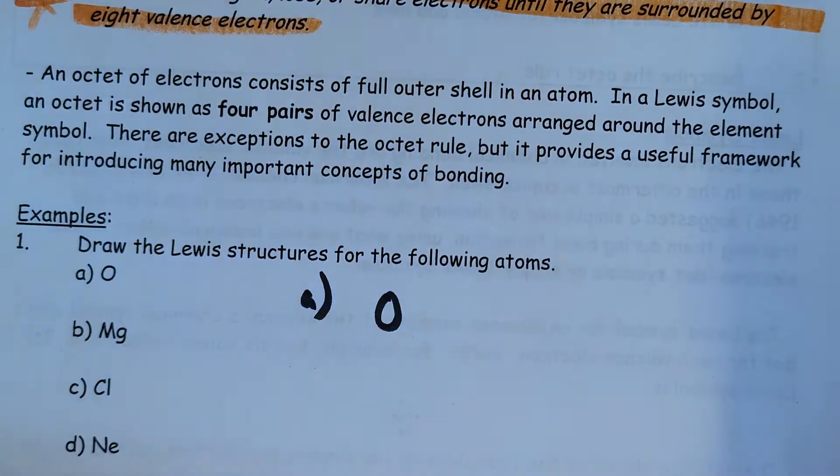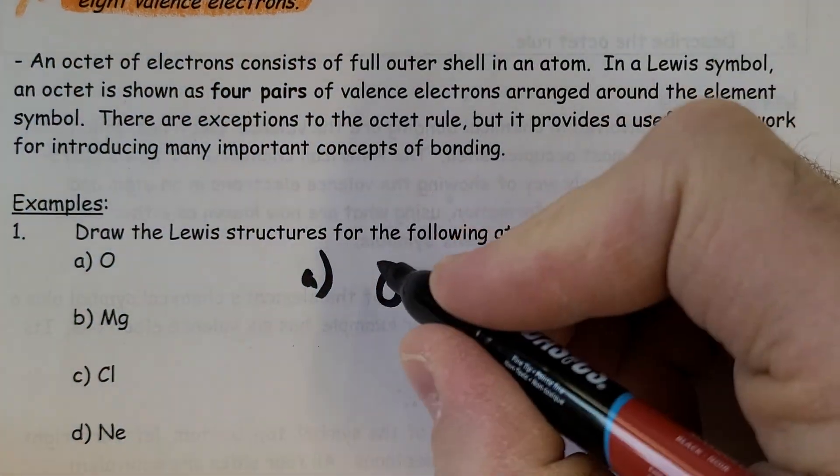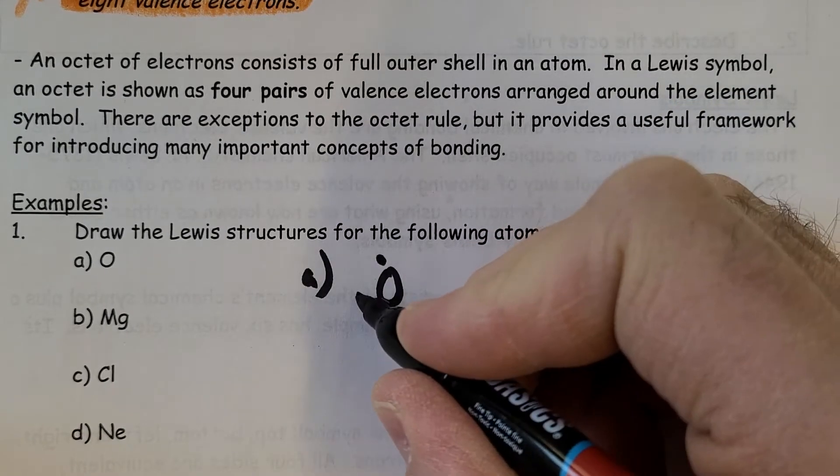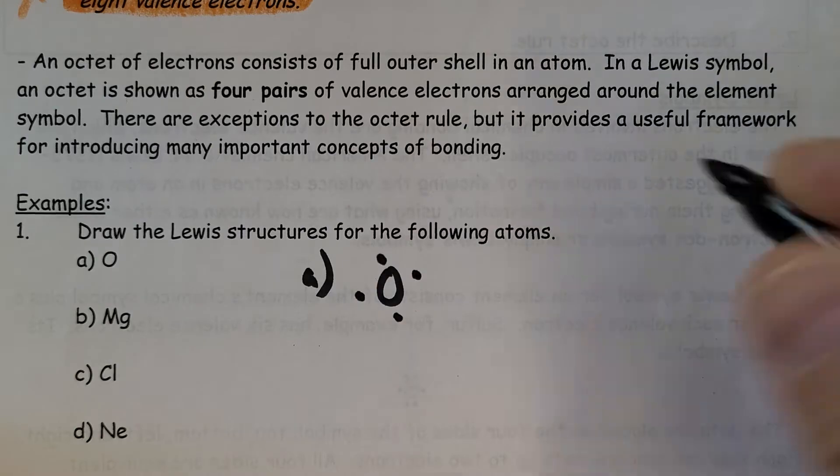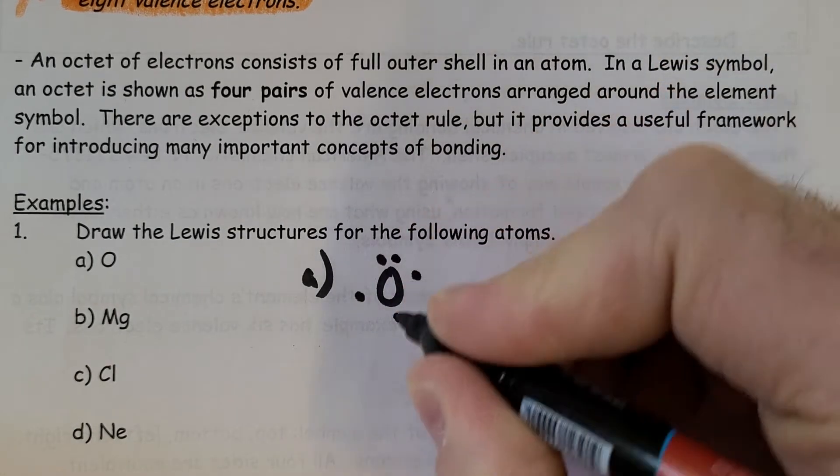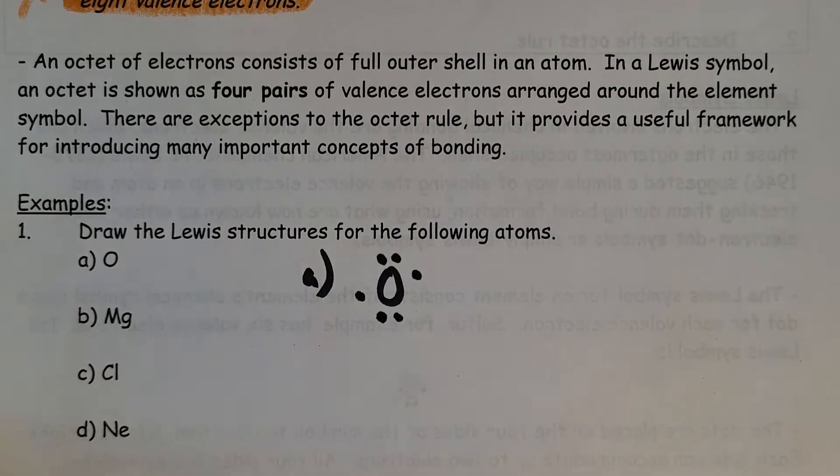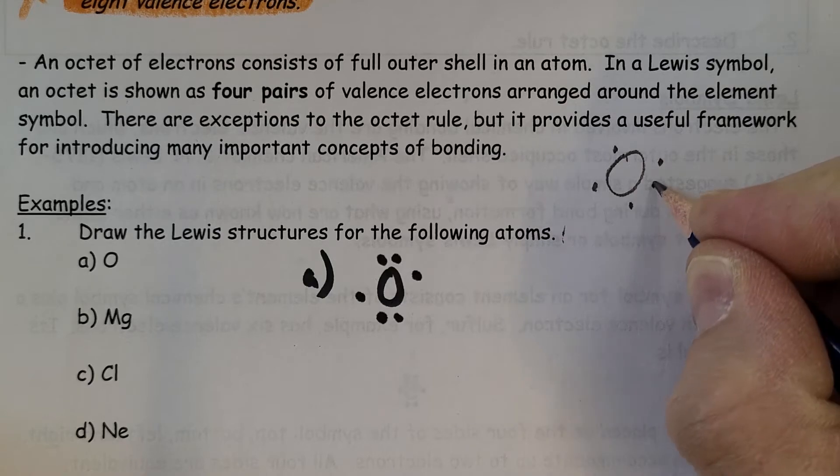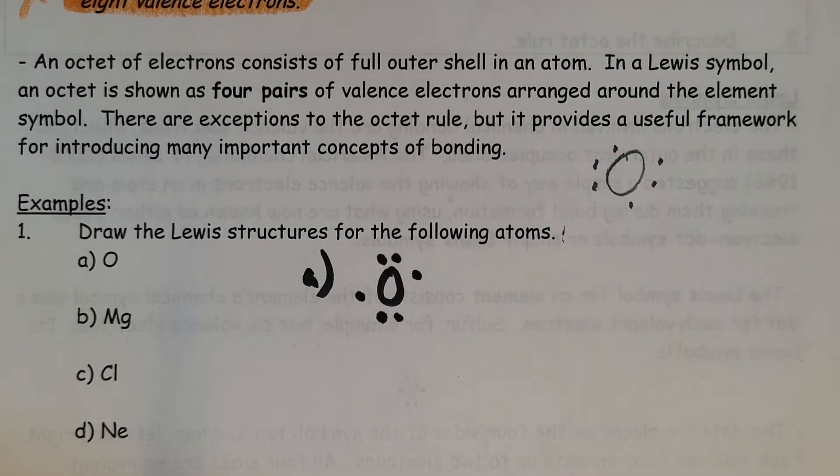Oxygen, super easy. We just look over here. It's Group 6A, so it has six valence electrons. I could start by putting one here, here, here, here. So I've used four, then start pairing them up, so I could have that. I could have started over on the other side, it doesn't matter, it doesn't really matter. I could have made it like that.